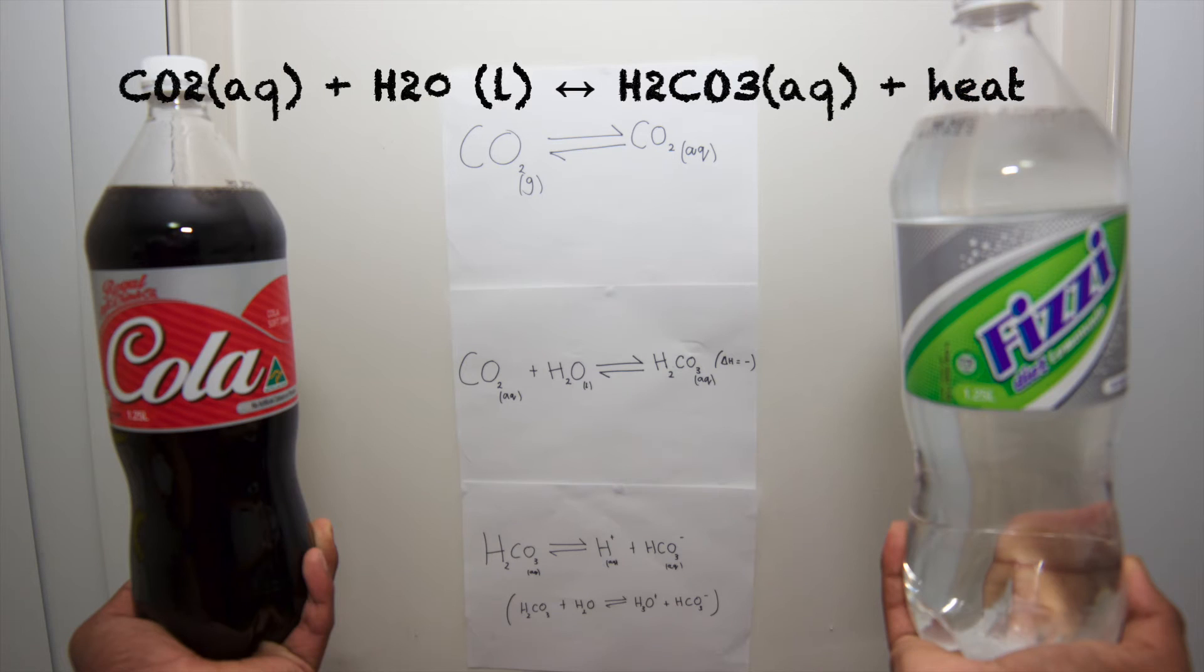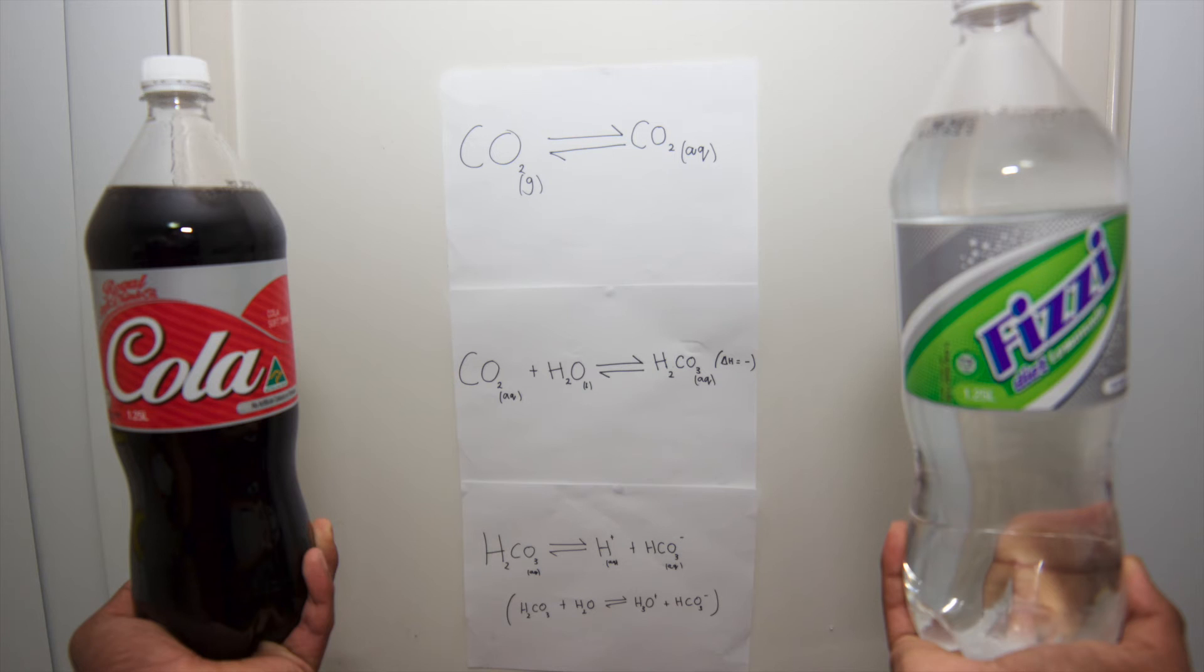If a soft drink is warmed, the system favors the direction that absorbs heat, the endothermic reaction. This will favor the reverse reaction, again leading to the release of CO2 from solution. Heating a carbonated solution will accelerate the rate at which the solution becomes flat.